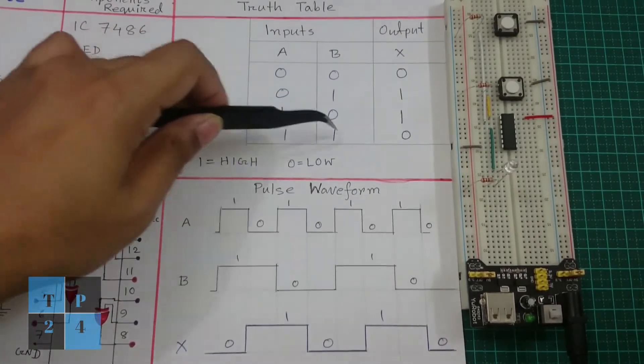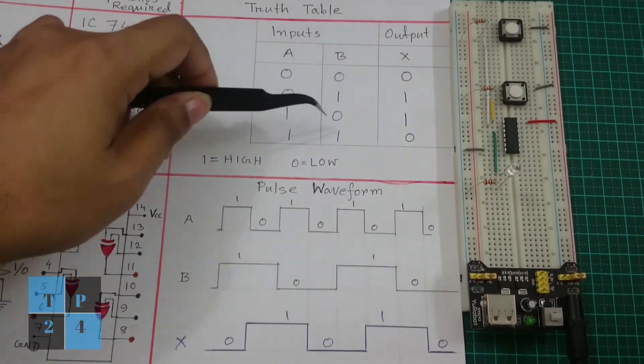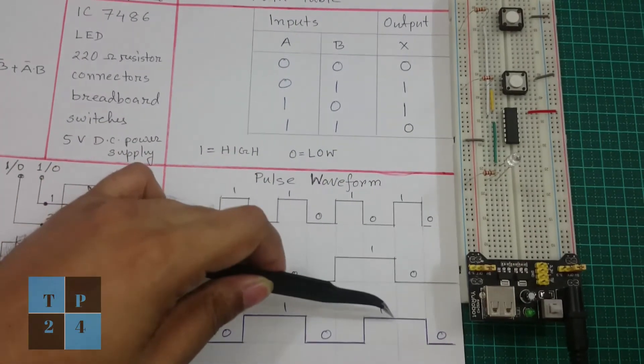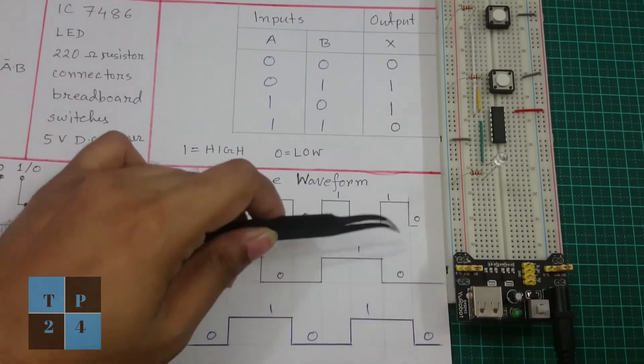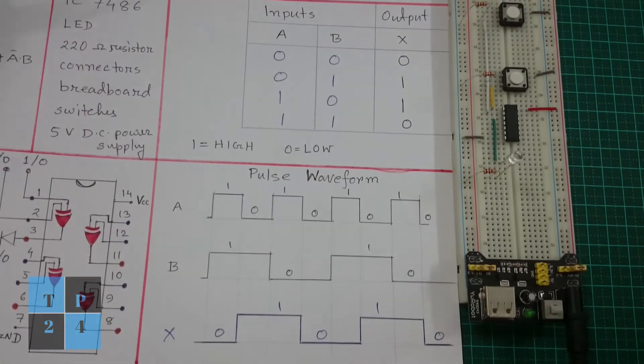And in the truth table 1 and 0 is 1 and then the output is 1. And here 0 and 0 is 0. So which follows entirely the truth table.